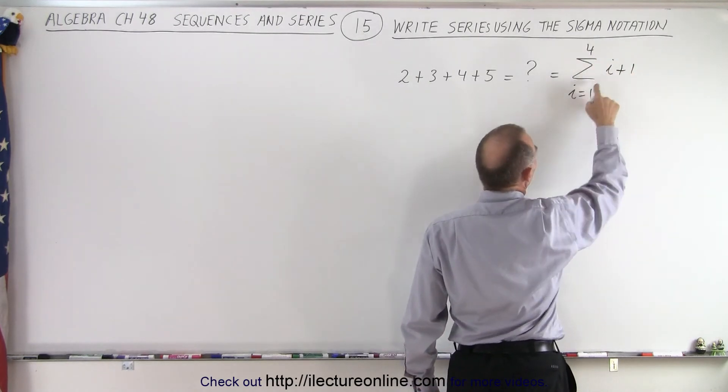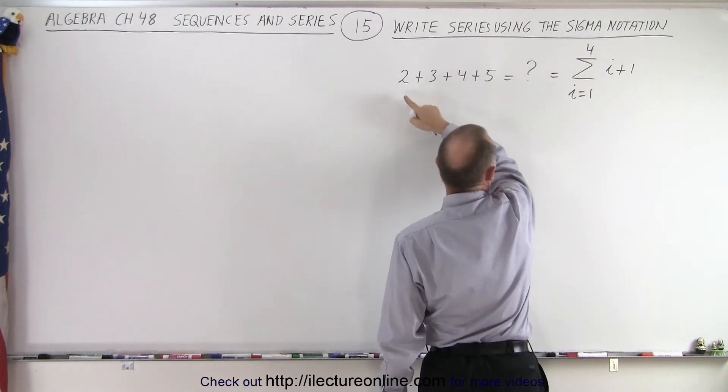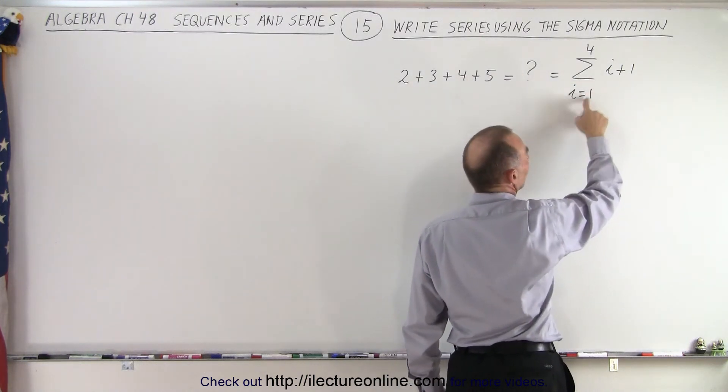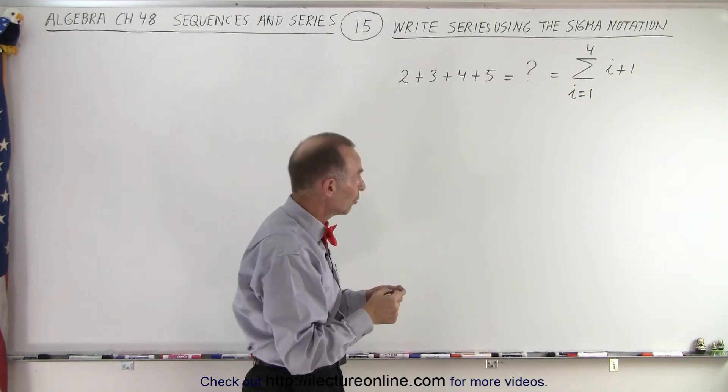Now I can see that if I replace i by one, I get one plus one which is two, which I have over here. Then if I replace i by two, I get two plus one which is three, which is my next term, and it looks like I managed to do what I needed to do.